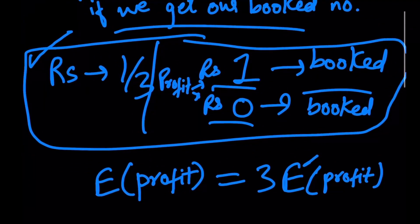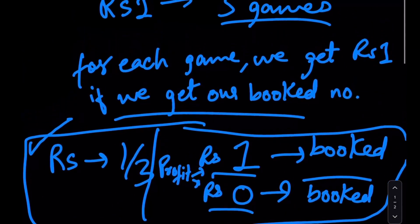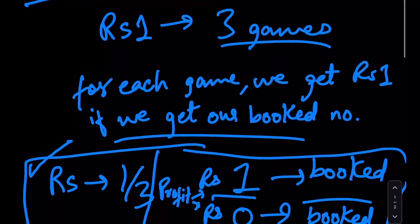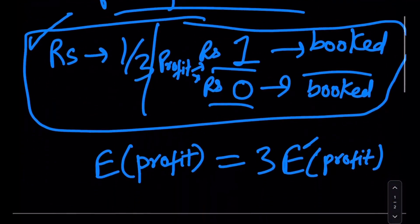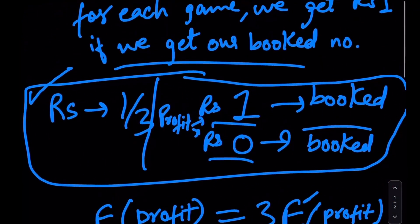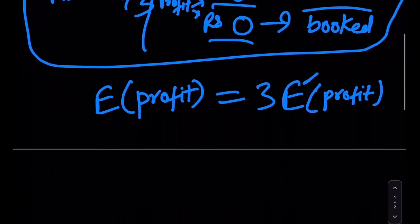So I'm denoting it by E dash to represent the sub-game that we just defined. Again, try to understand that essentially what's happening in this game is we're playing three sub-games where we're paying 1/3 rupee for each game. And if we get the number we have booked on, then we win one rupee, and if we don't get that number, we lose that 1/3 rupee because we essentially win zero rupees.